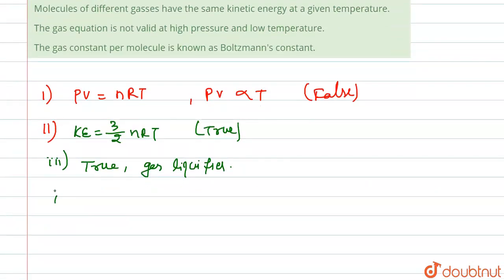The fourth statement says the gas constant per molecule is known as Boltzmann constant. This is R upon molecule, which equals k. So this statement is also true. Only statement one is false, so the correct option is option A. Thank you.